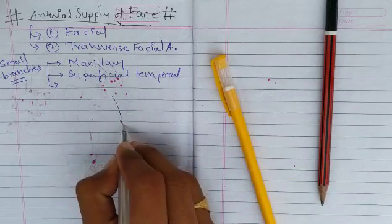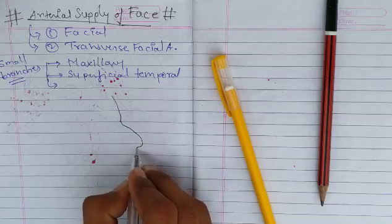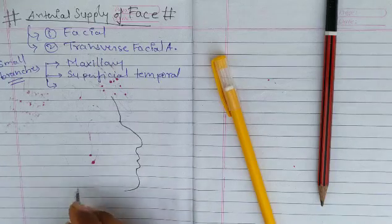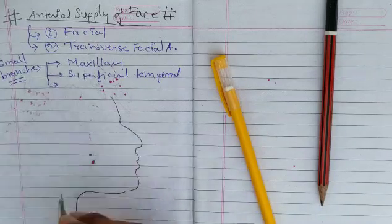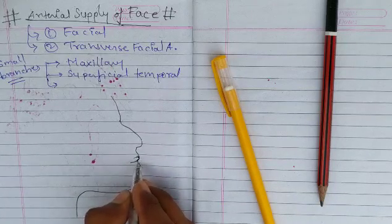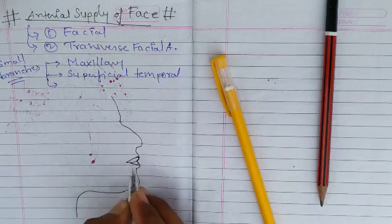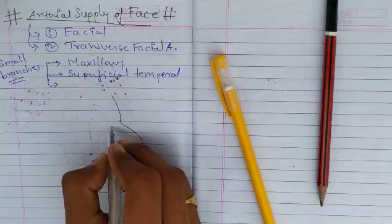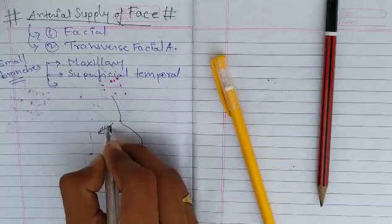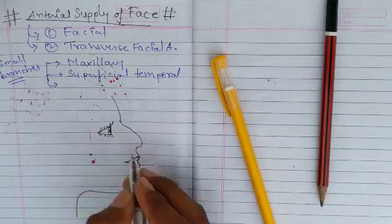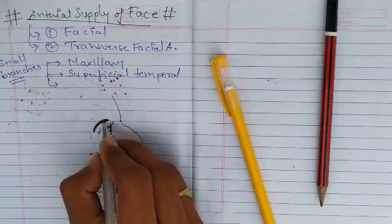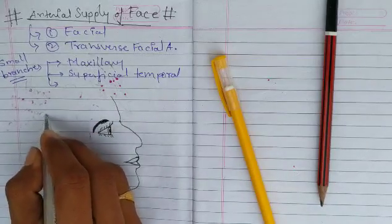This is your nose, your upper lip, lower lip and jaw. And this is your eye. This is your ear.